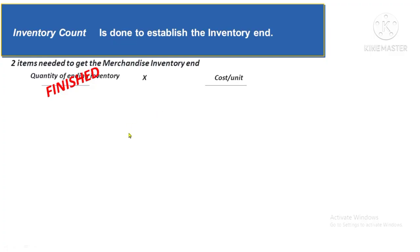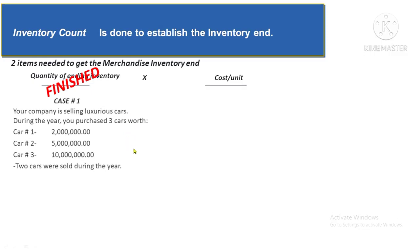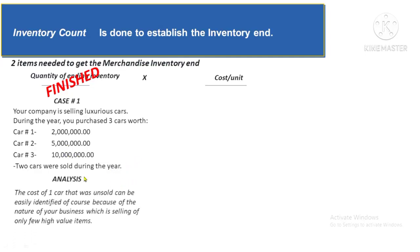To illustrate: Scenario 1 — your company sells luxurious cars. You purchased three cars: Car 1 at 2 million, Car 2 at 5 million, Car 3 at 10 million. Two cars were sold. The cost of the one unsold car can be easily identified because of the small number of high-value items involved. That is what we mean by specific identification.